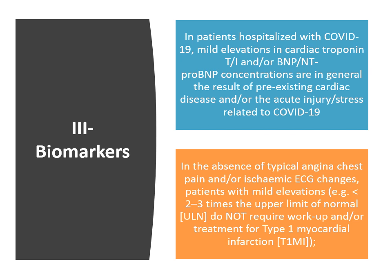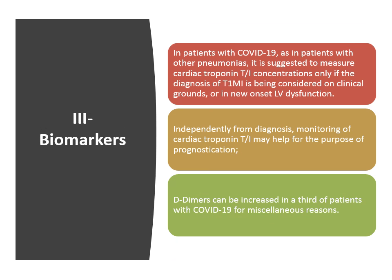In the absence of typical angina or ischemic ECG changes, patients with mild elevation — two to three times the upper limit of normal — don't require workup or treatment for type 1 myocardial infarction. In patients with COVID-19, as in patients with other pneumonias, it is suggested to measure cardiac troponin concentration only if the diagnosis of type 1 myocardial infarction is being considered on clinical grounds, or in the presence of new-onset left ventricular dysfunction. Independently from diagnosis, monitoring of cardiac troponin may help for prognostication.